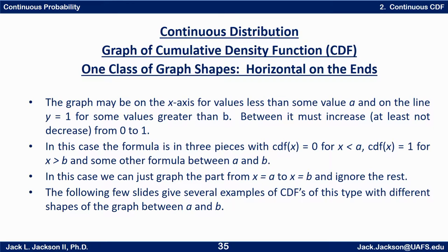There are a couple of different classes of CDF graph shapes. The first class consists of functions where the graph actually equals 0 on the left and 1 on the right, increasing from 0 to 1 in between — possibly with some level pieces but otherwise increasing. In this case the formula is at least three pieces: CDF(x) = 0 for x less than a, CDF(x) = 1 for x greater than b, and some other formula between a and b.